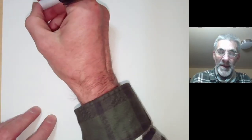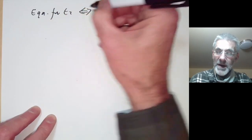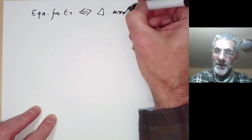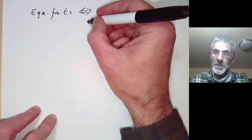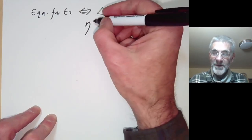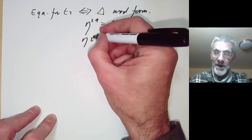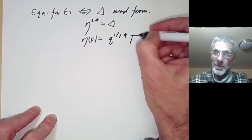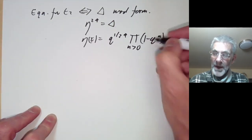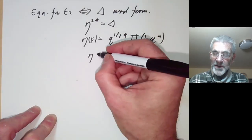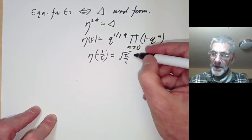The functional equation for E2 is equivalent to the fact that Δ is a modular form. In practice, instead of using Δ it's easier to use its 24th root, the Dedekind eta function. So η²⁴ equals Δ, and η(τ) equals q to the 1/24 times the product over n > 0 of (1 minus q to the n). Its functional equation is η(−1/τ) equals the square root of τ/i times η(τ), being careful about the sign of the square root.